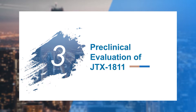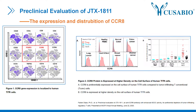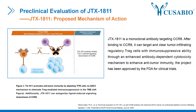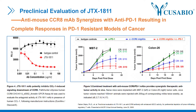Here we highlight the preclinical evaluation data of the CCR8-targeted drug JTX-1811. Figures 1 and 2 demonstrate that CCR8 is mainly expressed on tumor-infiltrating Treg cells and is distributed on the surface of target cells. Figure 3 is a schematic diagram of the action mechanism of JTX-1811. JTX-1811 is a CCR8-targeting monoclonal antibody developed by Jounce Therapeutics, which binds to CCR8 and can target and clear tumor-infiltrating regulatory Treg cells with immunosuppressive ability through an enhanced antibody-dependent cytotoxicity mechanism to enhance anti-tumor immunity. It has been approved by the FDA for clinical trials in the United States.